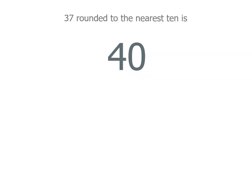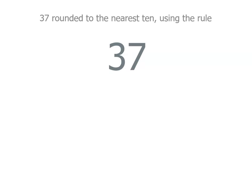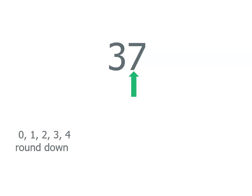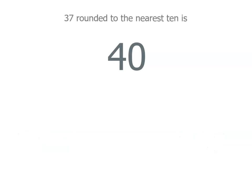Let's use the rule as well, not just the number line. We're rounding to the nearest 10, so we go to the tens place, and that tells us we're going to be rounding down to 30 or up to 40. Then we move one place to the right. If that number is 0, 1, 2, 3, or 4, we round down. If it's 5 or more, we round up. We've got a 7, so we're rounding up to 40.